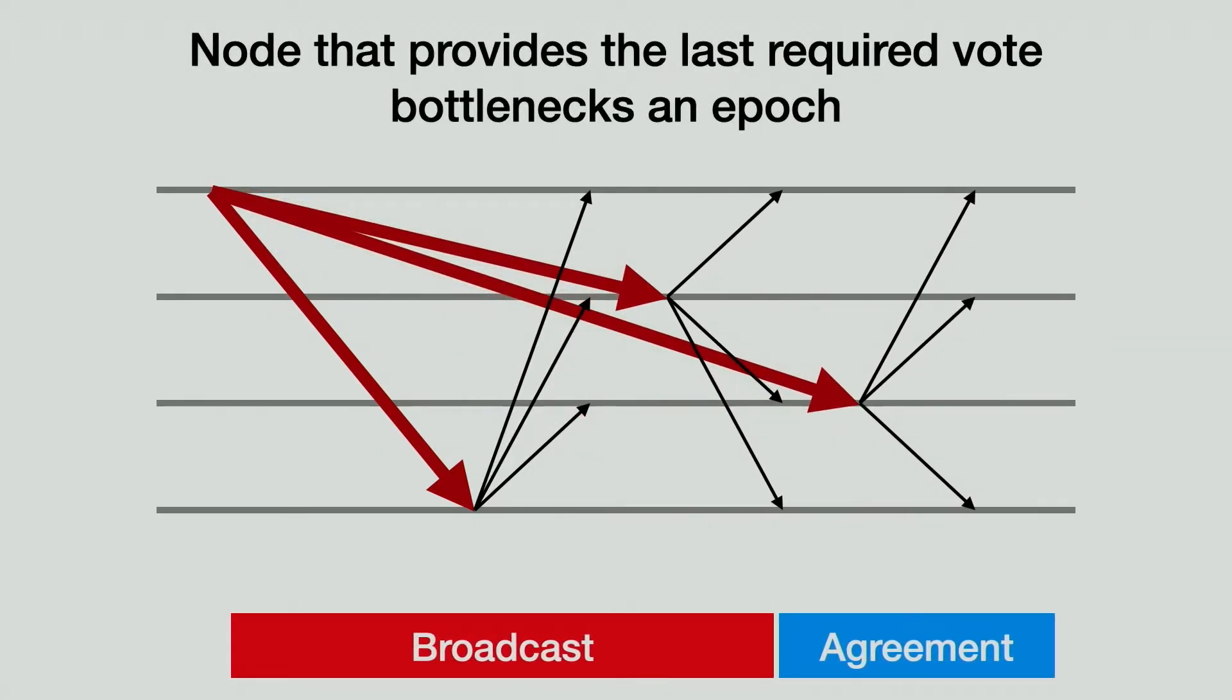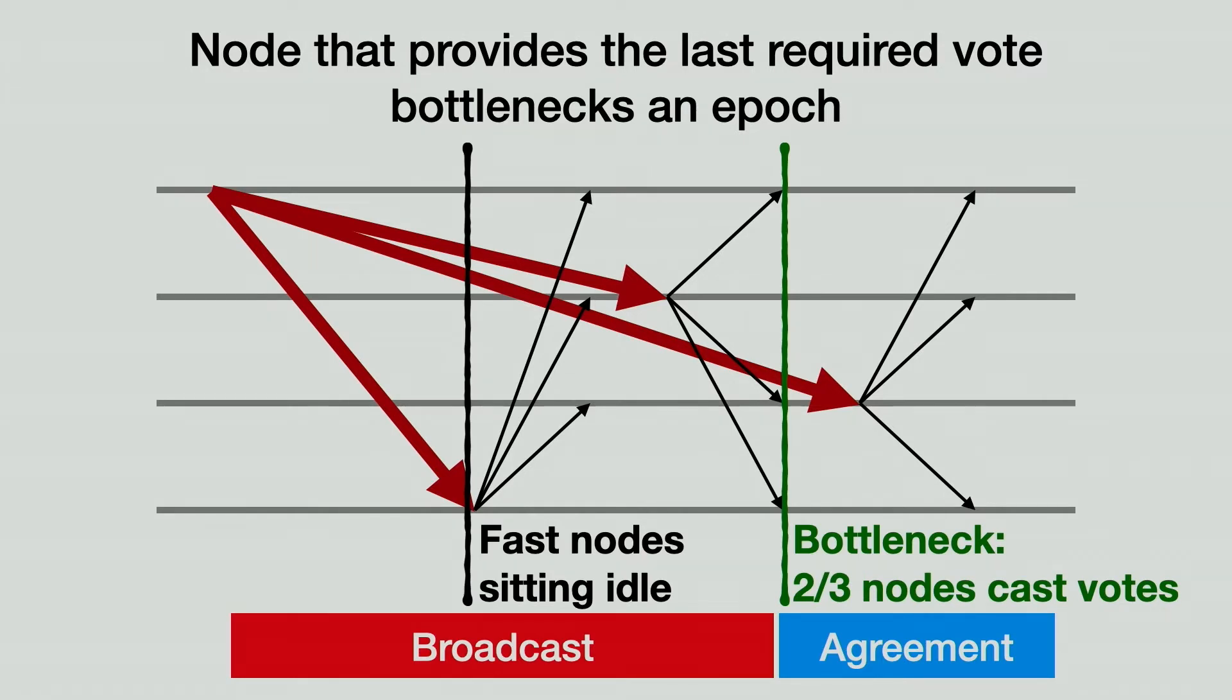Because the internet bandwidth varies across locations, and recall that block download is bandwidth bottlenecked, different nodes will take different amount of time to download the new block. In every epoch, there will be a node which provides the last vote of the two-thirds that we need to finish agreement. No one could finish the epoch earlier than this node because there wouldn't be enough votes for agreement. As a result, this node is the bottleneck of that epoch. Its bandwidth limits the throughput of the system during that epoch because the epoch can only finish after it has downloaded the block. This limit could be much lower than the average bandwidth of the nodes. Any node that has a faster connection than the bottleneck will need to wait and will underutilize its bandwidth.